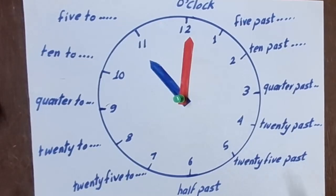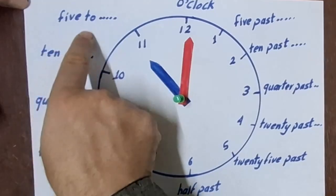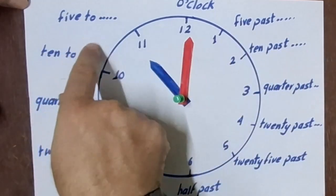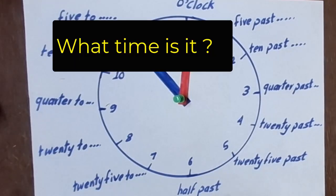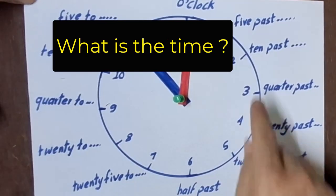Hi everyone, today we're going to learn how to tell the time using 'past' and 'to'. When I ask about the time, I use the question: 'What time is it?' or 'What is the time?' When telling the time, I'll be using 'past' and 'to'.